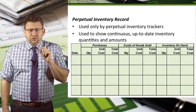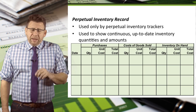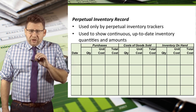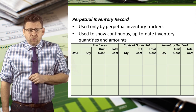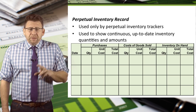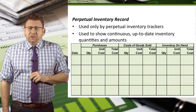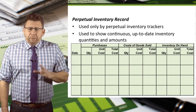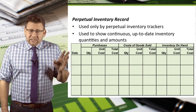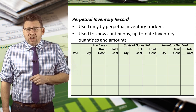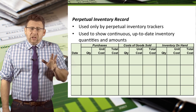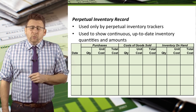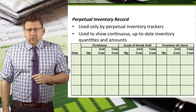Before we learn why companies choose one method over another, let's recall that there are two methods to track inventory: perpetual and periodic. Since the perpetual method keeps a running total of inventory units and values, the perpetual inventory record is often used to do this — albeit automated nowadays. The perpetual inventory record tracks purchases and sales of units at cost and revalues ending inventory after each transaction. We'll see this in detail when we look at examples of the different valuation methods.